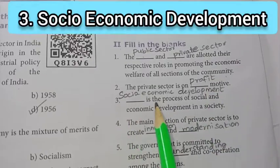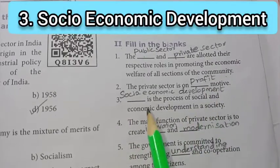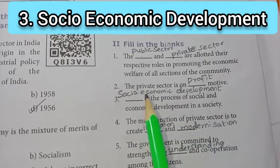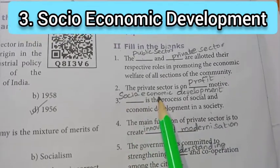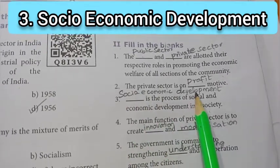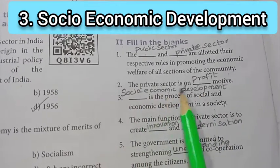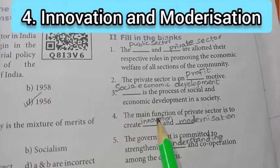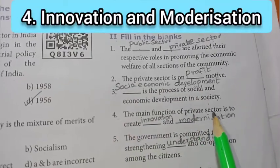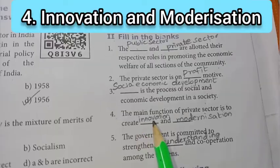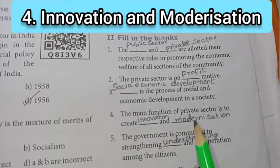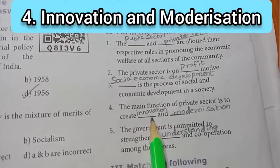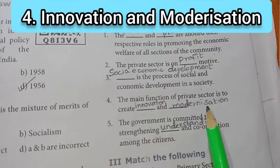Third one: dash is the process of social and economic development in a society. The answer is socio-economic development. Fourth one: the main function of a private sector is to create innovation and modernization. The answer is innovation and modernization.